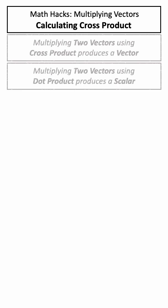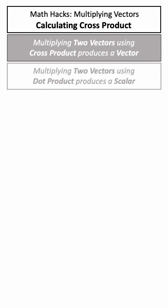Hi there. Today we're covering cross product. There are two ways to multiply vectors together, dot product and cross product. Today we are covering cross product, which produces a vector as a result.